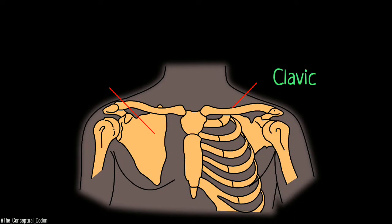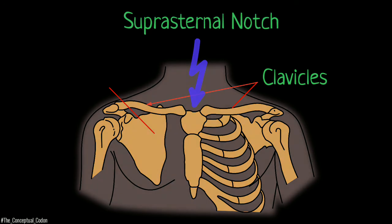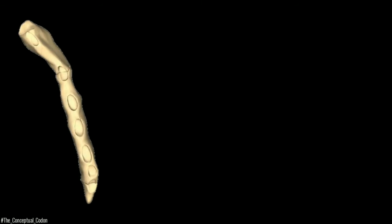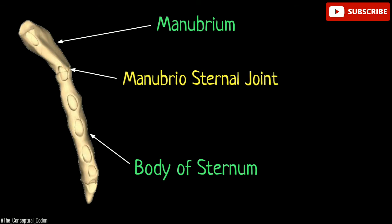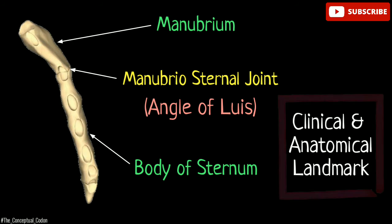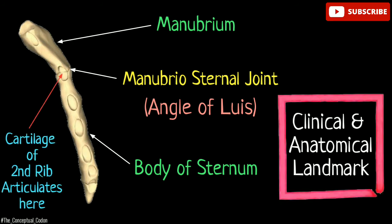The clavicles articulate with the manubrium on its upper border. The notch between these sternoclavicular joints is known as the suprasternal notch. The manubrium and the body of the sternum are joined by fibrocartilage, and this junction forms a prominent ridge called the angle of Louis. This is an important clinical and anatomical landmark, as the cartilages of the second rib articulate with the sternum at this point.